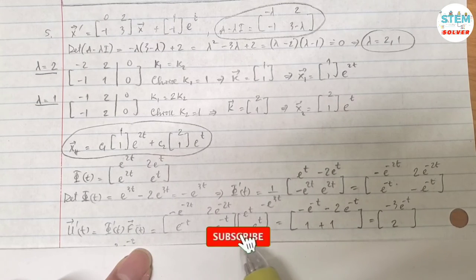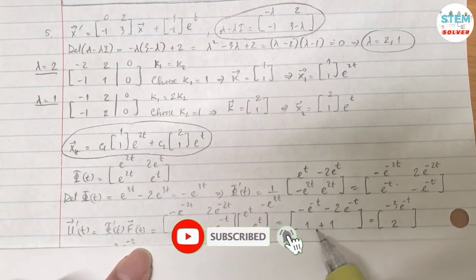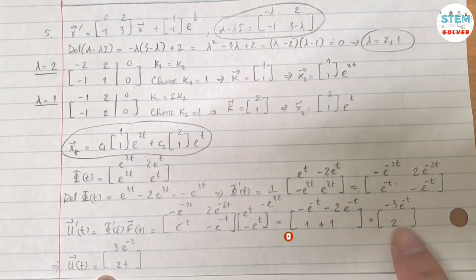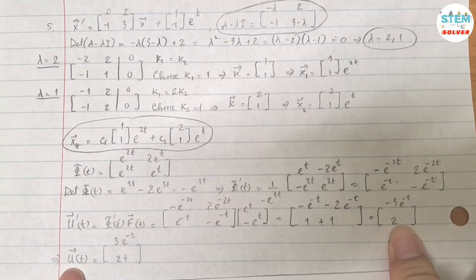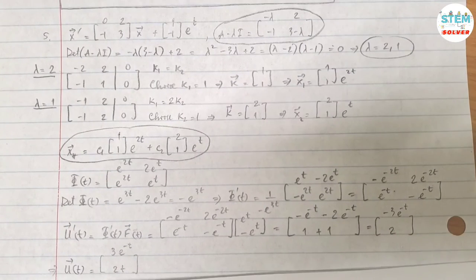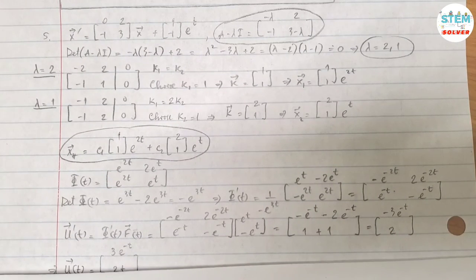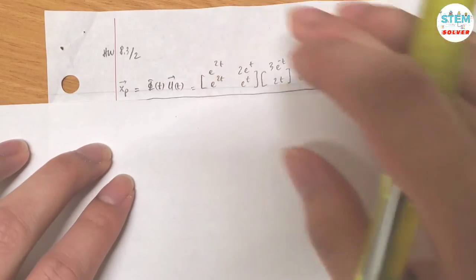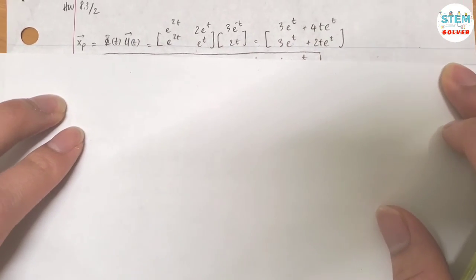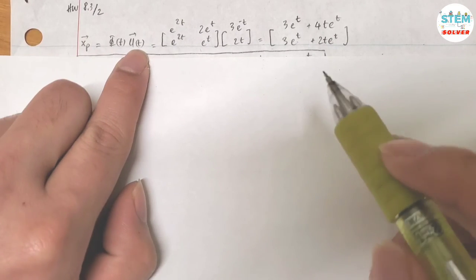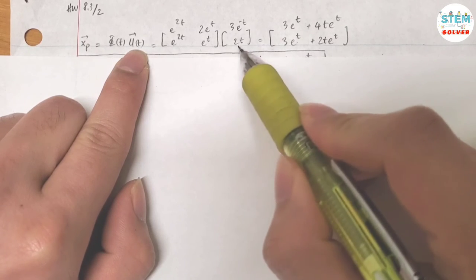With this order, multiply these together. It gives you this one. Simplify it, you will get this one. If I'm integrating this one, that gives me vector u of t. Vector u of t is equal to this one. So integrating this one gives you this one. Now it's time to write our final answer, which is this one.